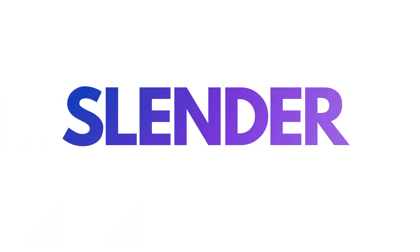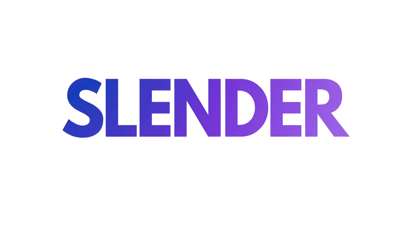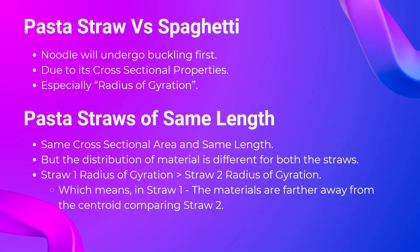Looking into these two examples more deeply, we get to know how buckling works. In the first example, we compare two different materials — a paper straw and spaghetti. The materials are different, so for argument's sake, let's consider the same material. I'm switching the paper straw with a pasta straw. Now we compare a pasta straw versus spaghetti — both the same material. Which one will buckle first? Obviously the noodle. The main reason would be the cross-sectional properties, especially the radius of gyration.